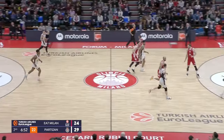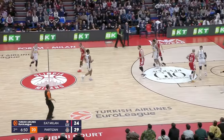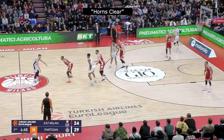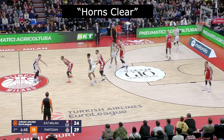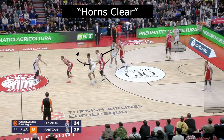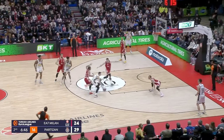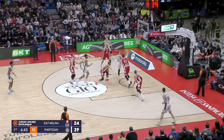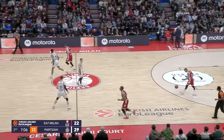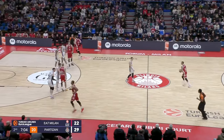This next ball screen concept or action is what we call horns. It's anytime you have two guys right around the elbow setting screens on both sides, and then you have people in the corners. In this particular play, we would call it horns clear because this guy right here is going to slip out and create a double gap for the guard to drive downhill. This is a formation or a set that teams can run multiple things out of.